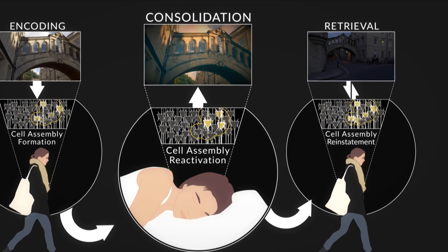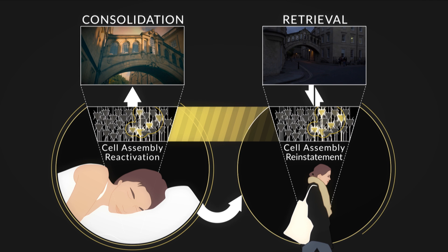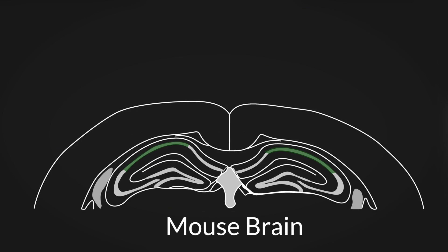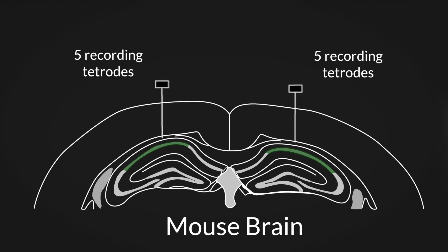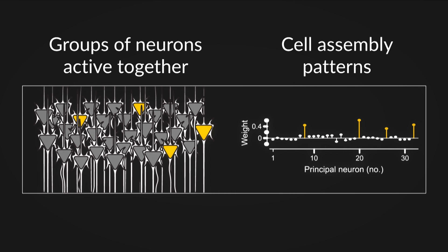To test whether the offline reactivation of newly formed cell assemblies is important for their later reinstatement during memory retrieval, we recorded in parallel the activity of up to 100 neurons from the hippocampus of mice exploring various spatial environments. We applied a statistical framework based on independent component analysis, which allowed us to find groups of neurons that tended to be active together, quantified as cell assembly patterns.